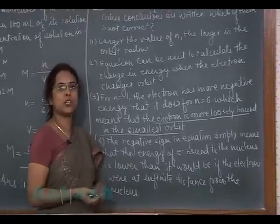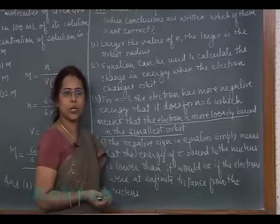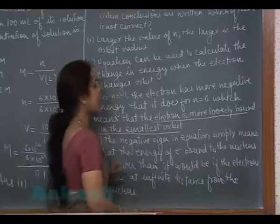If an electron is present in the lower orbit, it is more strongly bound to the nucleus compared to the electron which is present in the higher orbit.